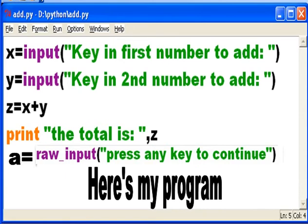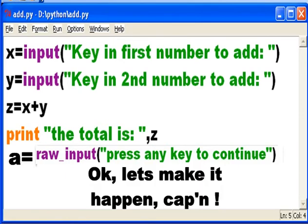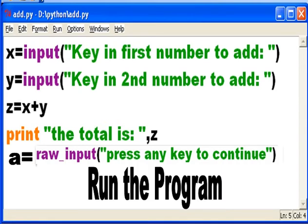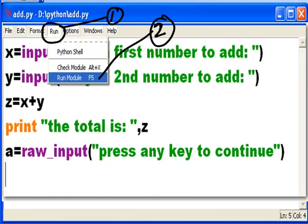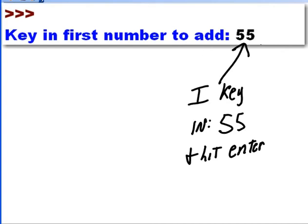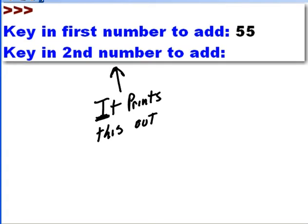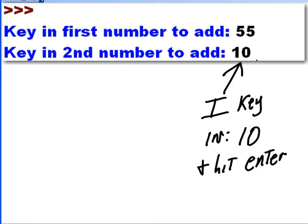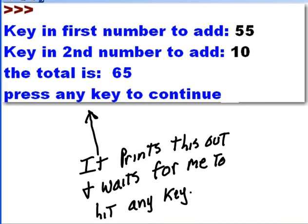Here's my program. Okay, let's make it happen. I go to the menu, click on Run, then click on Run Module. It prints this out. I key in 55 and hit enter.